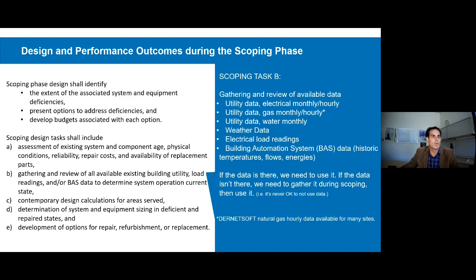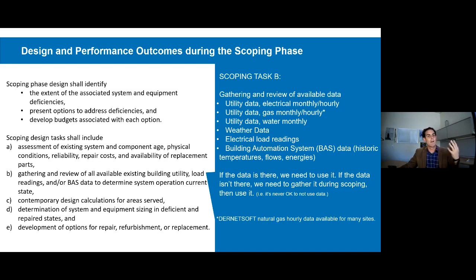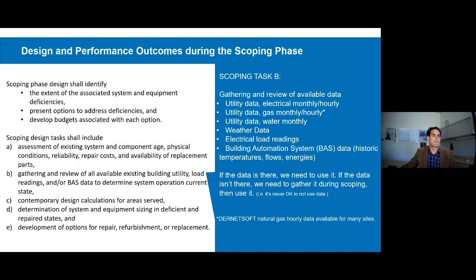If you have a building automation system there's really a whole trove of data that we should be looking at. The bottom line is that we expect the design to be driven by data. If the building exists, there is data about it and we need to use it. If that data isn't readily available, then we need to go through the effort to gather it and then use it.